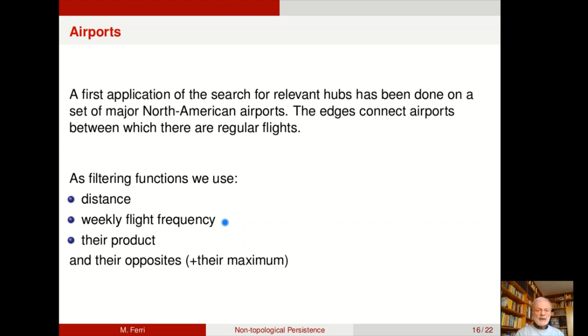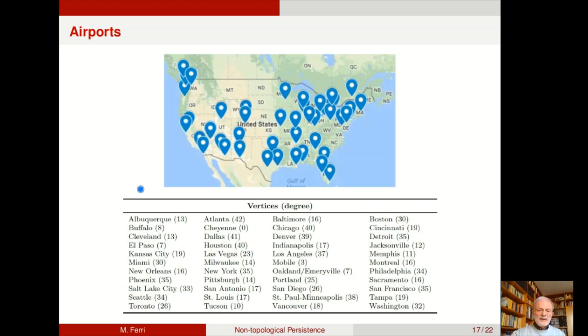The first example of this application we did is with major North American airports as vertices, edges connecting airports between which there are regular flights. Filtering functions: distance, weekly flight frequency, the product of the two, the opposite of the opposites of the three. These are the airports, well the cities we consider. If we had more than one airport we merged them into a single vertex.